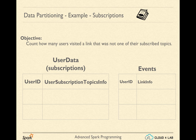Let us take an example of an online magazine. We have users who read any kind of articles on the website. They also have preferred subscriptions based on topics. Our objective is to count how many users visited a link that was not in their subscribed topics, and we have to do it almost in real time.